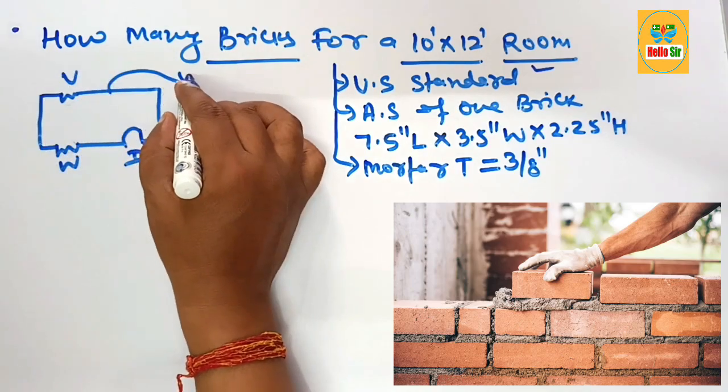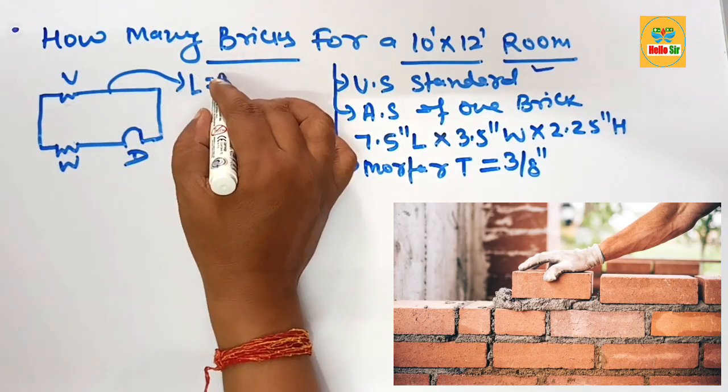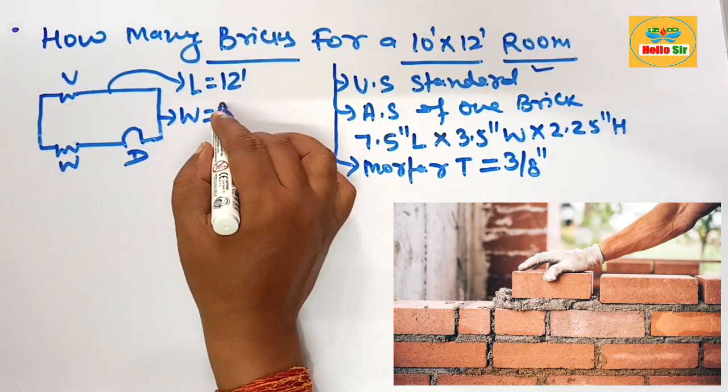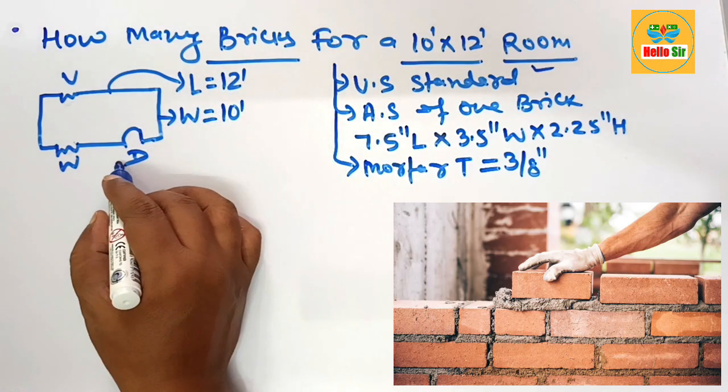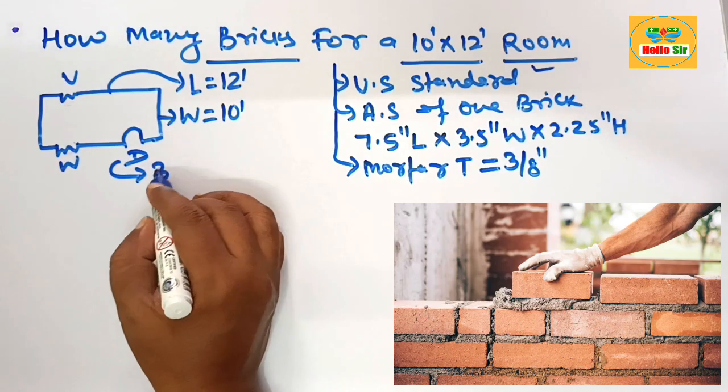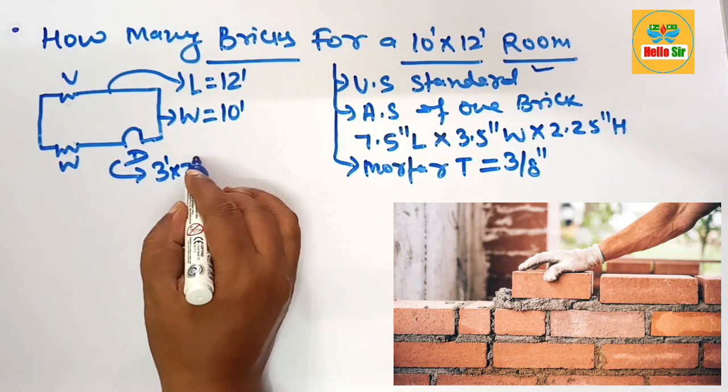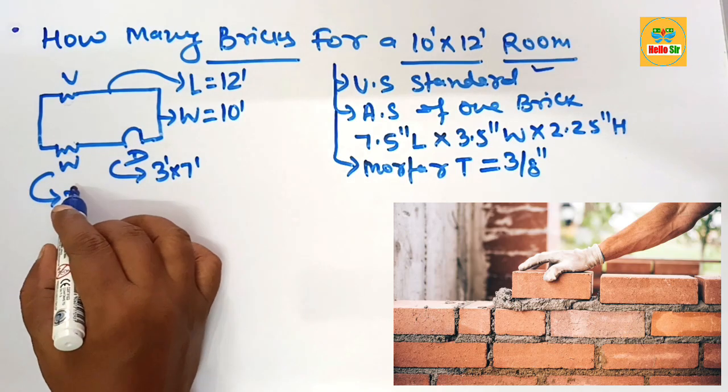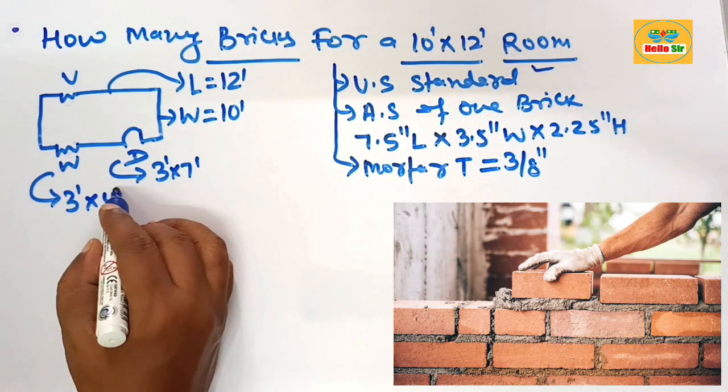The length of this room is about 12 feet and the width is about 10 feet. The standard door dimension is about 3 feet by 7 feet, and the standard window dimension is about 3 by 4 feet.